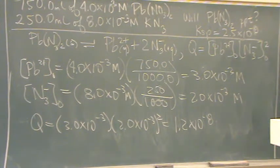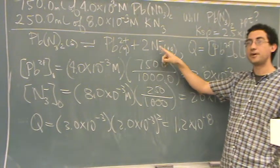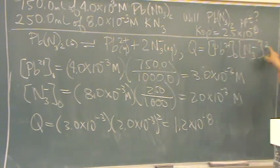Student asks: Why is 2.0 times 10 to the minus 3 squared? Because this is squared. Oh, okay. So remember, when there's two, that's the most common mistake I saw in the homework. People forget to put that two here.